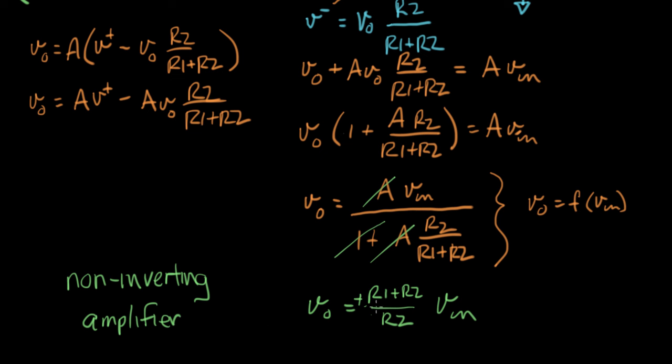So just to do a quick example, if R1 and R2 are the same, then we end up with an expression that looks like this. V out equals R1 plus R2, R plus R over R equals two. So the gain is two times V in.